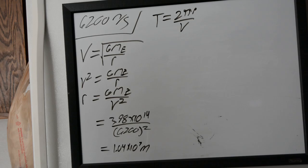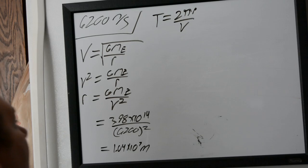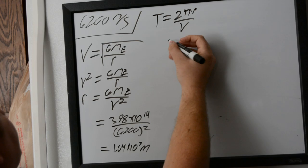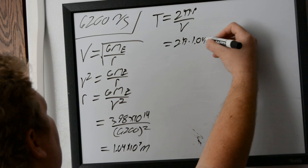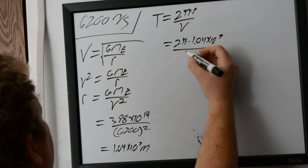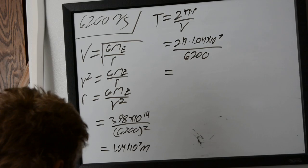So now we can just plug this value for r straight into this problem, since that is going to be our total distance from the center of the Earth to the border of our orbit. So that's going to be 2π times 1.04 × 10^7 meters over our velocity, which was 6200 meters per second. And we do that math,